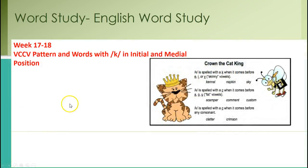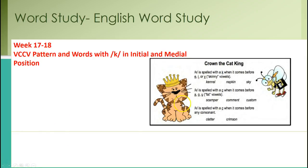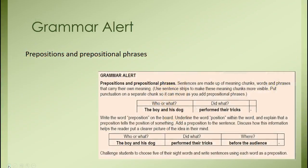Weeks 17 and 18 cover the vowel-consonant-consonant-vowel pattern with words with K in initial and medial position — looking at when do you use that K, when do you use that C, and what is that hard sound of K. You have something to put in your writing notebook and there are explicit instructions in your English word study.